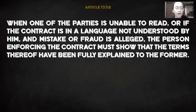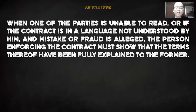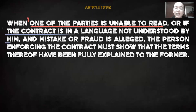First off, let us start with Article 1332, which provides that when one of the parties is unable to read, or if the contract is in a language not understood by him and mistake or fraud is alleged, the person enforcing the contract must show that the terms thereof have been fully explained to the former. This article contemplates two situations: first, the party is unable to read, and second, the contract is in a language not understood by the party.